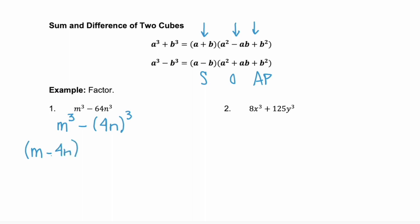Then we have our first item squared, plus our first times our second, plus our second, 4n, squared.